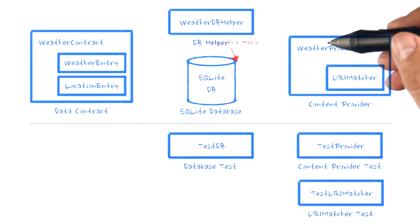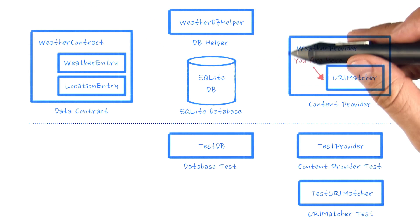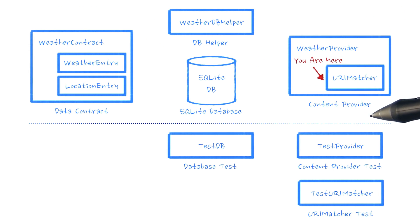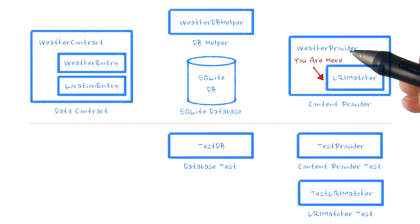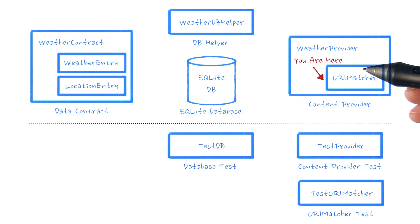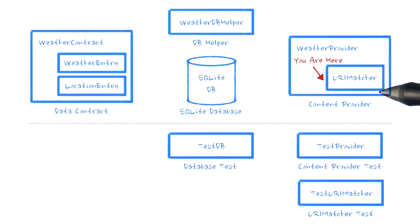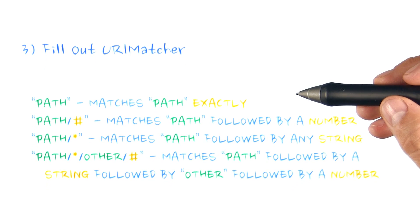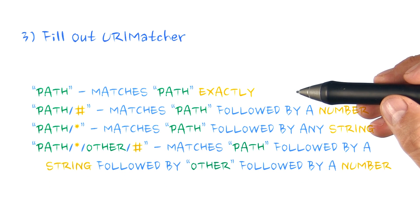We've given you code for the beginnings of a weather provider class within the data package that extends content provider. One of the tools that Android provides to help write a content provider is a URI matcher, which we are going to write shortly. Filling out a URI matcher is the third step in building our content provider.